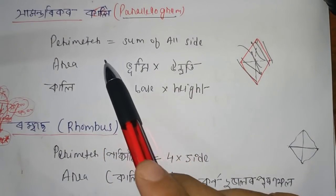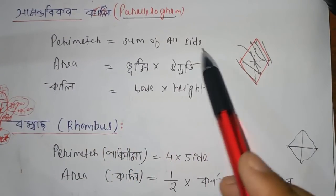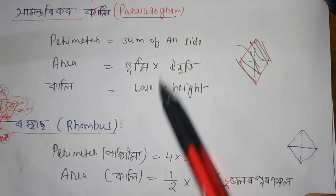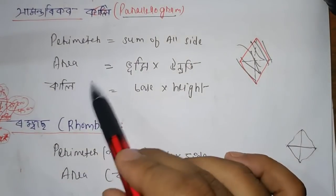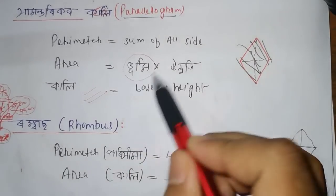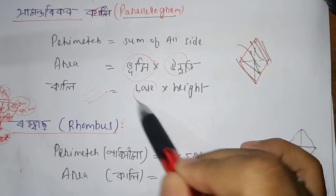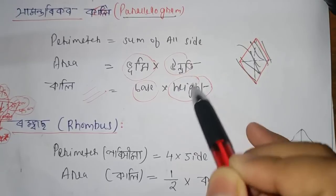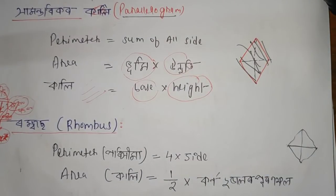For a parallelogram, you can add all the sides for the perimeter. The area formula is base into height. You can use this formula and apply it.